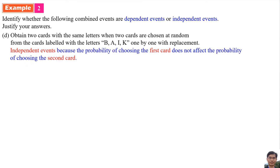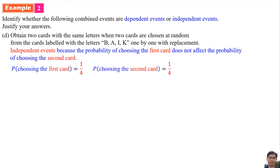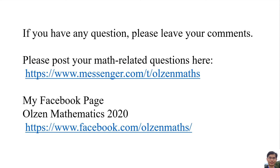Part d: Because the probability of choosing the first card does not affect the probability of choosing the second card, they are Independent Events. The probability of choosing the first card is 1 over 4, since there are 4 cards. After choosing the first card, the card is put back, so there are still 4 cards, making the probability of choosing the second card also 1 over 4. Therefore the two events are independent.